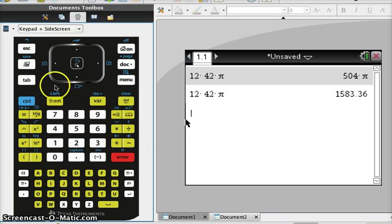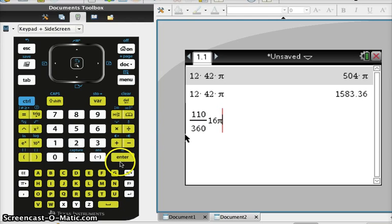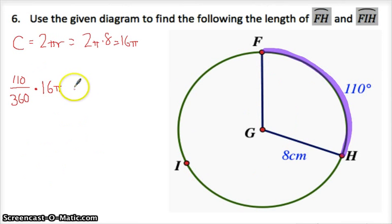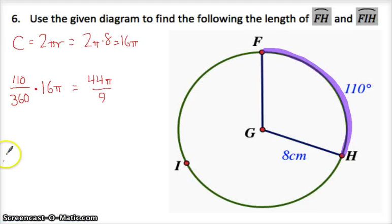We need 110 out of 360 times 16π. Just hit enter. 44π over 9. Or 44 ninths π. If you want that as a decimal, be my guest.